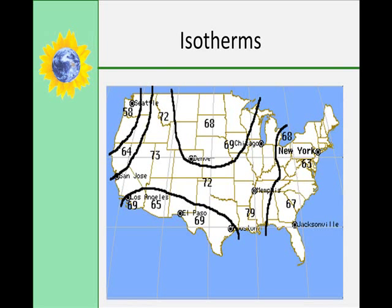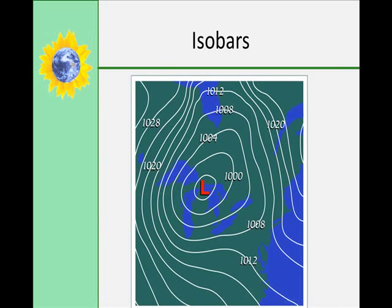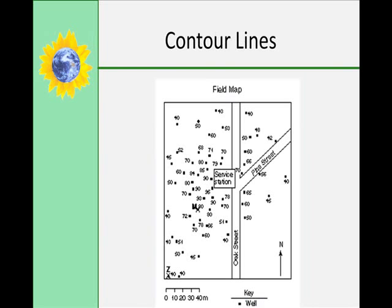Isotherms connect points of equal temperature. Isobars connect points of equal air pressure. And contour lines connect points of equal elevation.